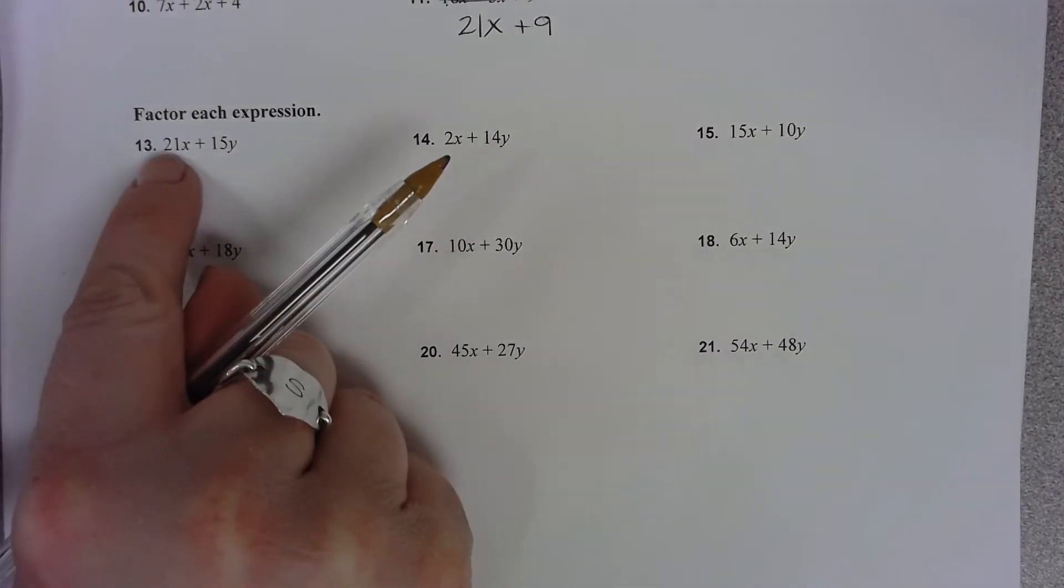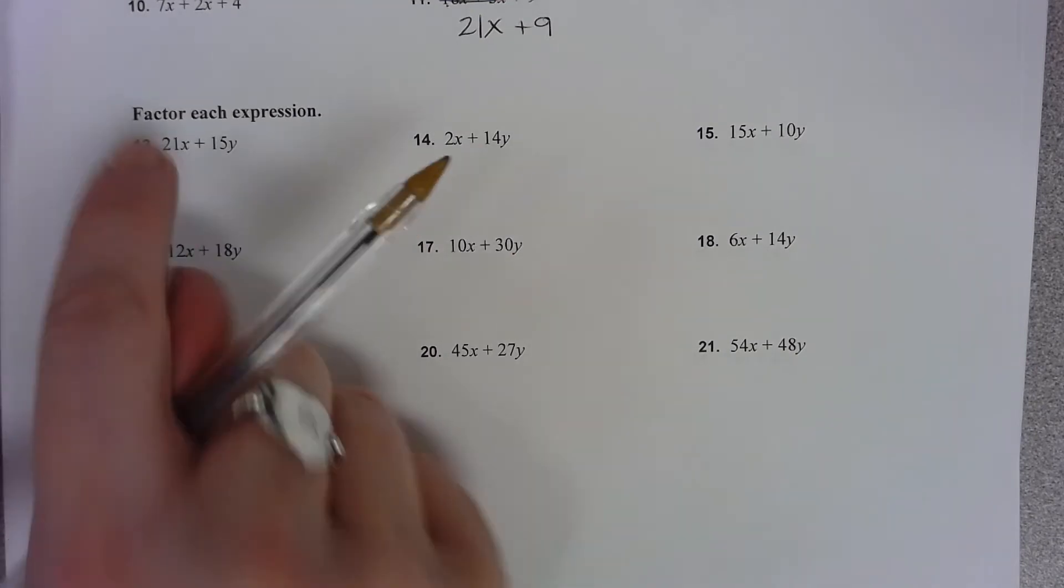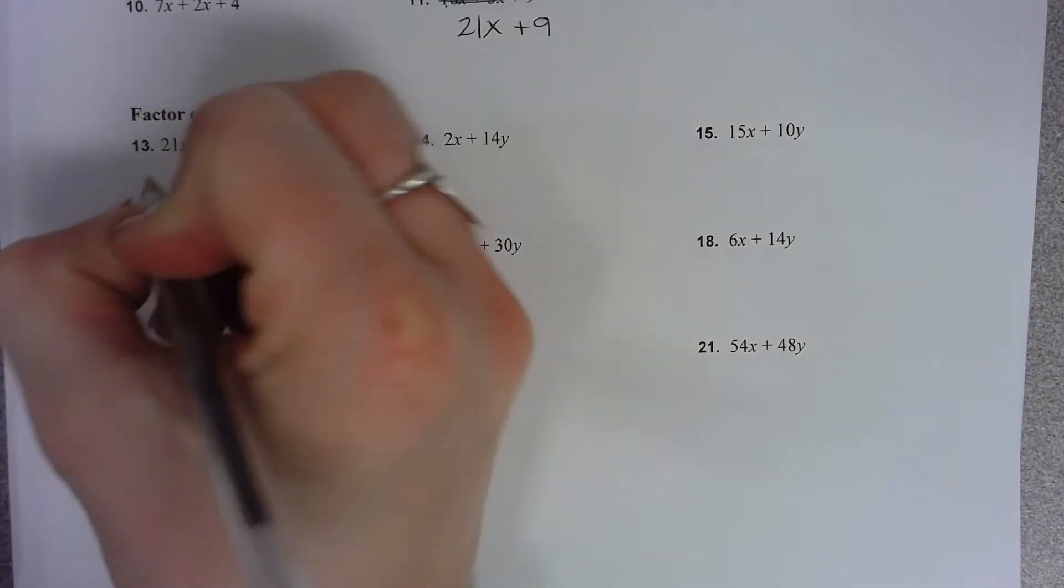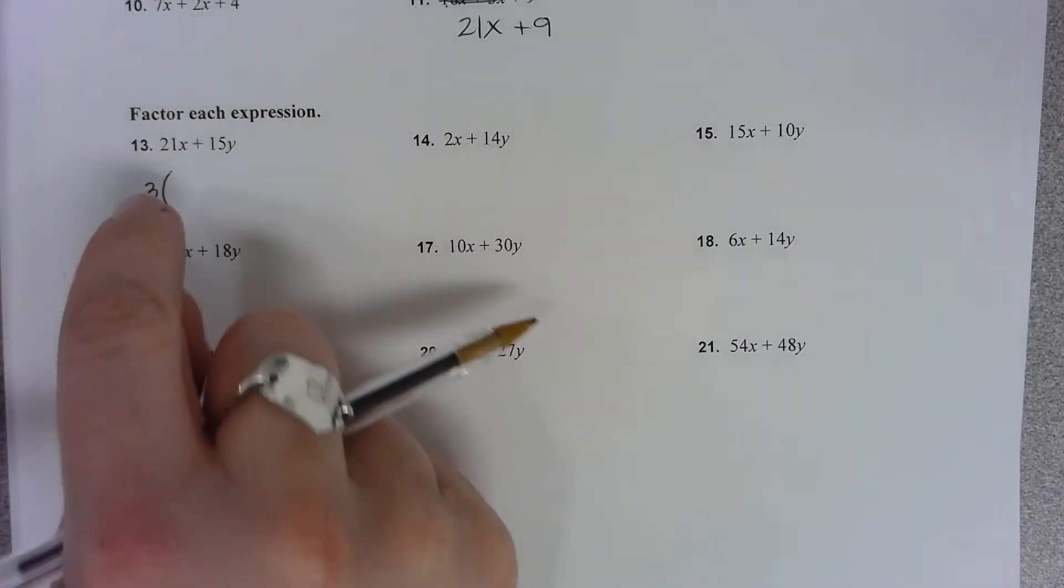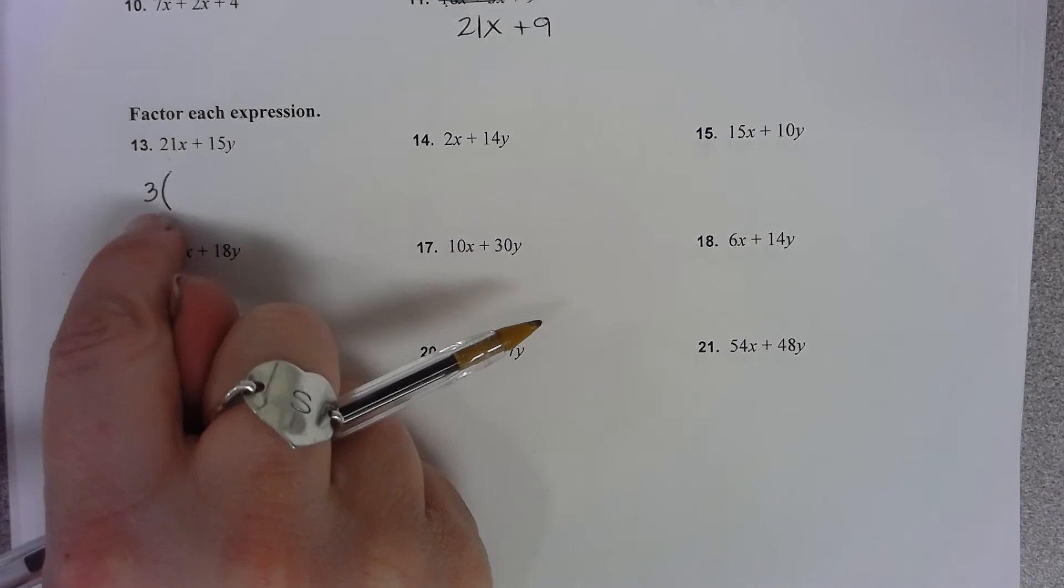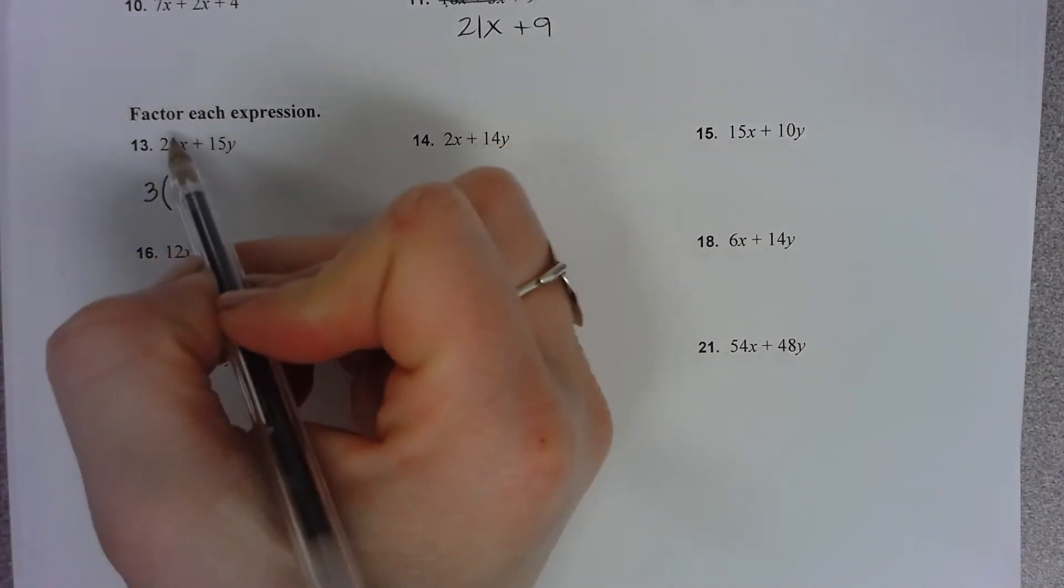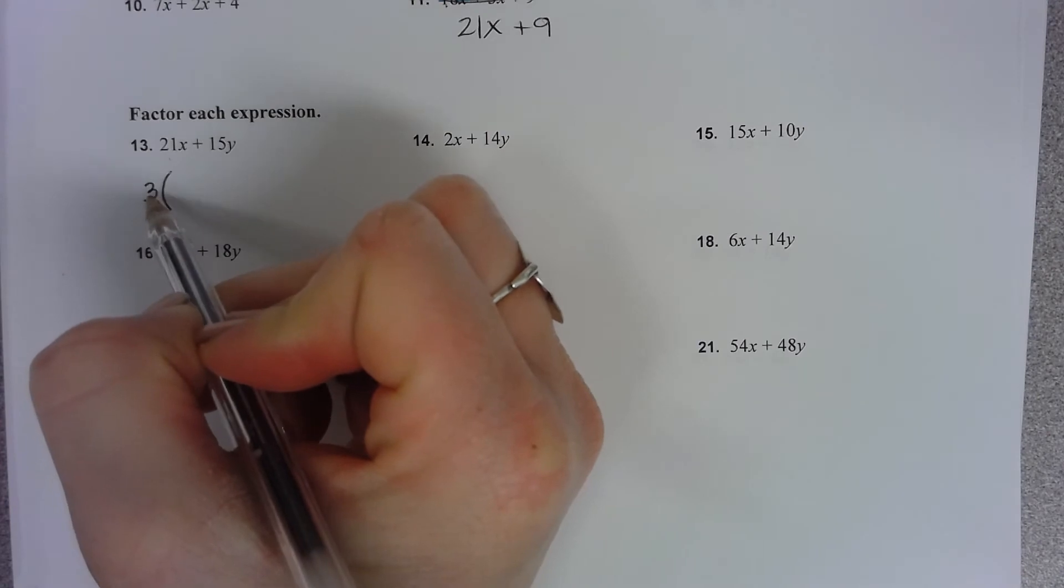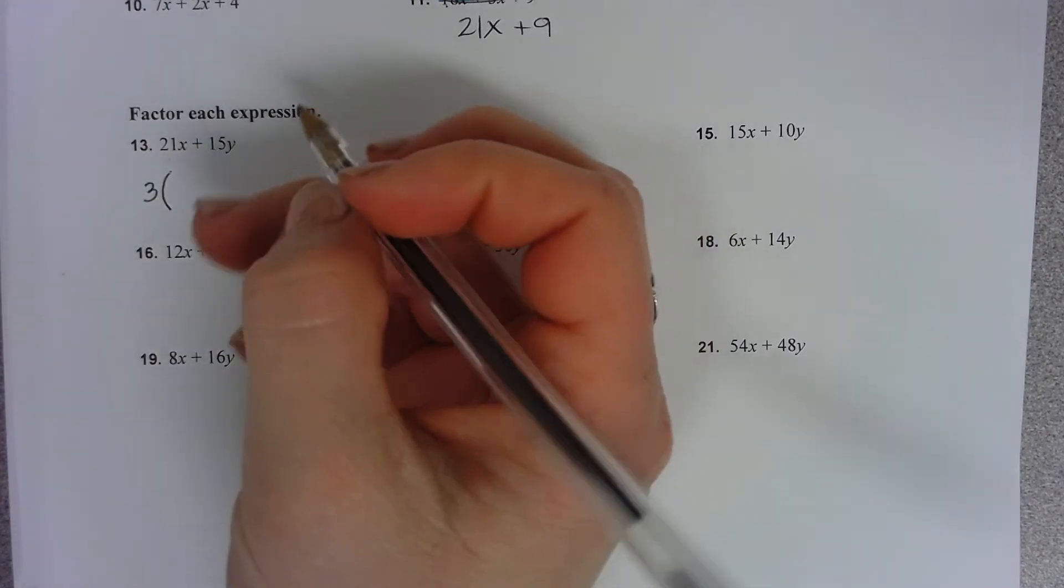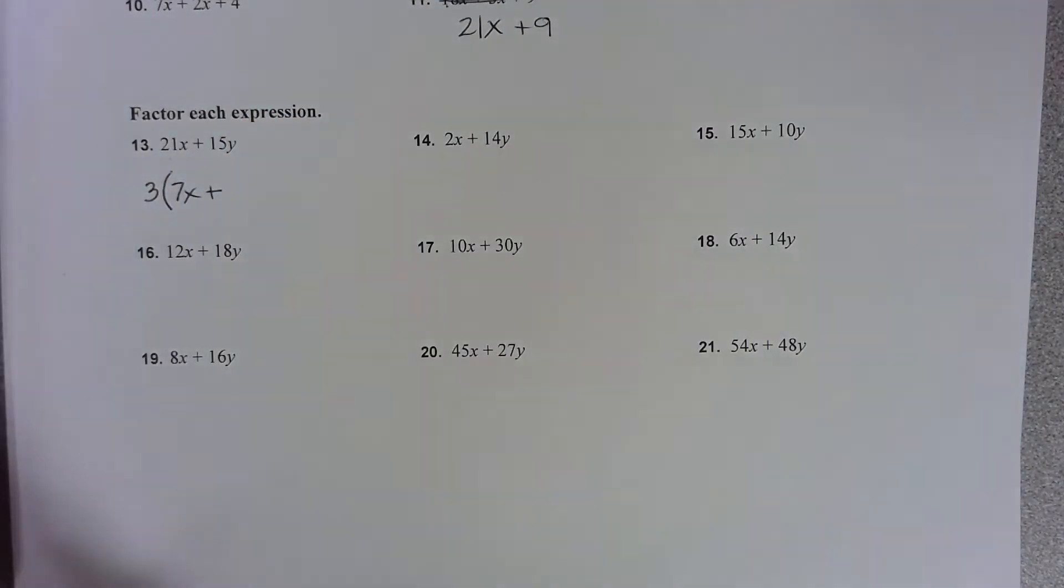So the GCF of 21 and 15, I know that 3 can go into both of those. So when I'm pulling my number out of those or factoring my GCF out of there, I'm dividing by that number, that GCF. And that GCF now gets pulled outside the parentheses. So when I divide 21x by 3, I know that 3 times 7 is 21. So I'm left with 7x.